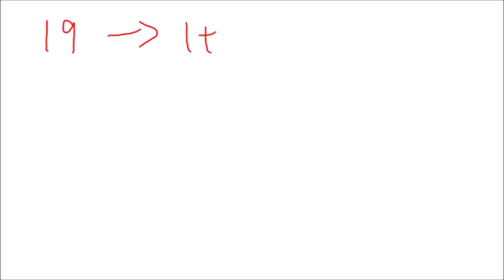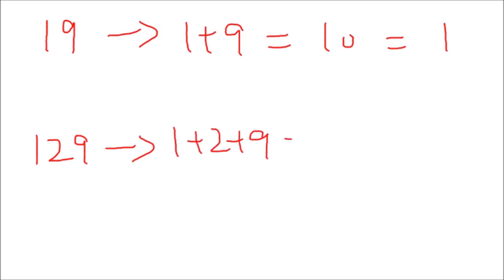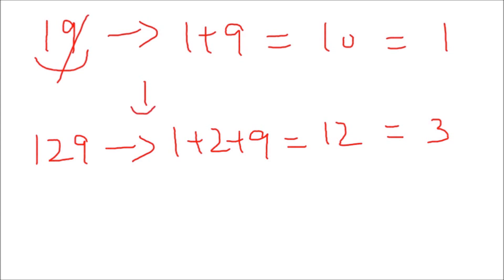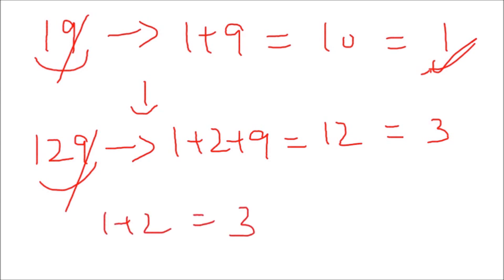Suppose you have to find the digital root of 19. One plus nine gives 10, and one plus zero gives 1, so the digital root is 1. Now if I remove the nine from 19, I'm left with just 1 — which is exactly the digital root. Another example: the digital root of 129 is 1 plus 2 plus 9, which gives 12, and further gives 3. If I remove the nine from 129, I get 1 plus 2 which is 3 — the same digital root.